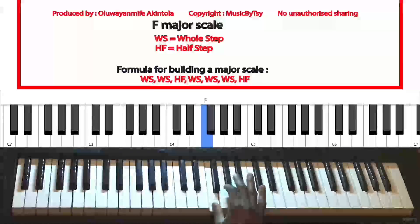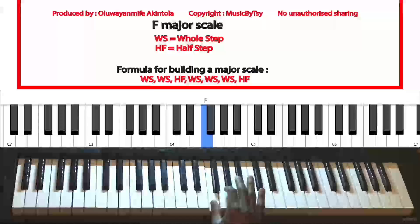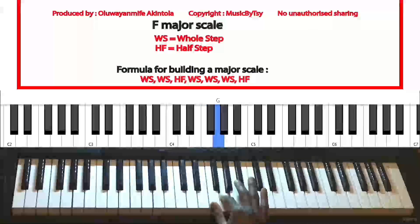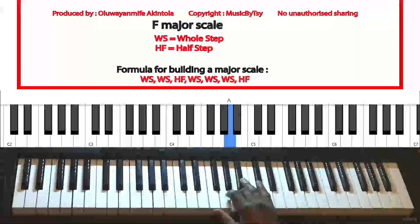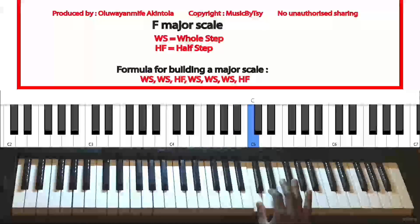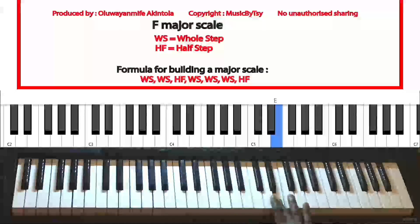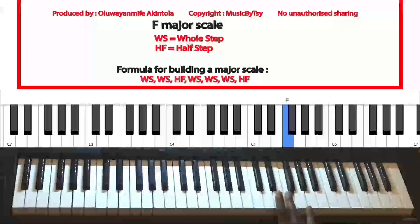So let's build the major scale for the key of F. Starting from the key of F, let's apply the formula: take a whole step, another whole step, then a half step, then a whole step, then a whole step, then a whole step, and then a half step. See that? That is the F major scale.